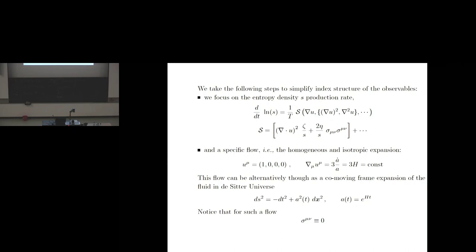It is well known that the leading terms in the entropy production are due to viscous coefficients in your hydrodynamics. You can see explicitly the ratio of the bulk viscosity to the entropy density and shear viscosity to the entropy density, coupled to two different tensor structures of the velocity gradient. When people ask about the large-order structure of the hydrodynamic expansion, they focus on some symmetric flows — usually on boost-invariant expansion. That's not what I want to do; I'm going to look at a different type of flow.